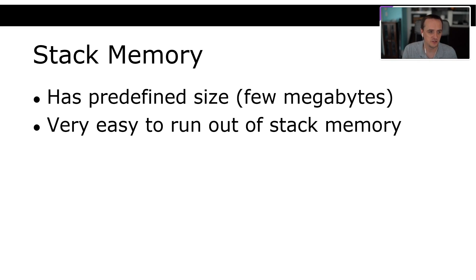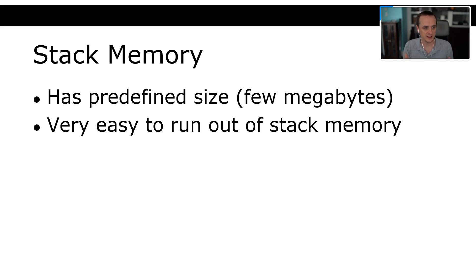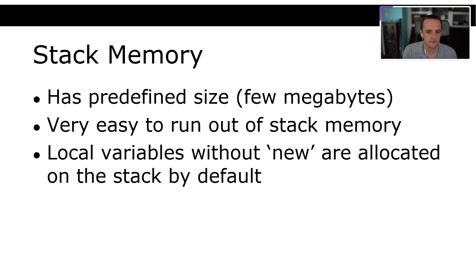It's very easy to run out of stack memory. If you have large data structures — say, an array with multiple megabytes — you cannot allocate that on the stack. You'd want a heap allocation for that large array. Local variables allocated without the `new` keyword are allocated on the stack by default.